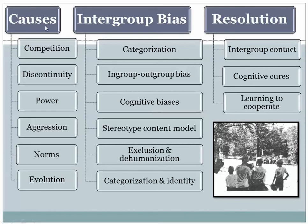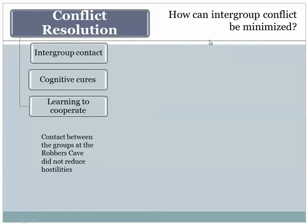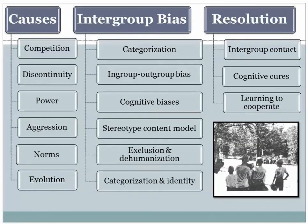In these presentations, we've looked at two components of intergroup relations: the causes, and the intergroup biases. What remains is an analysis of conflict resolution, and we'll turn to that in our final presentation on this chapter. Thank you.